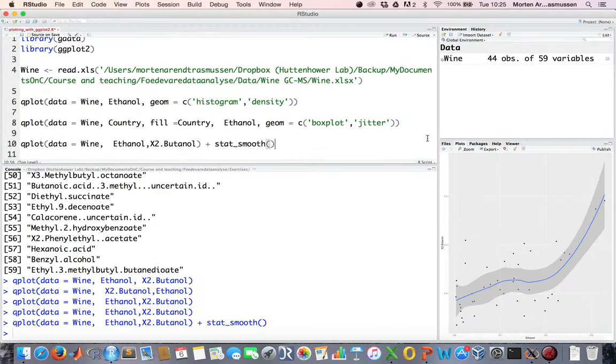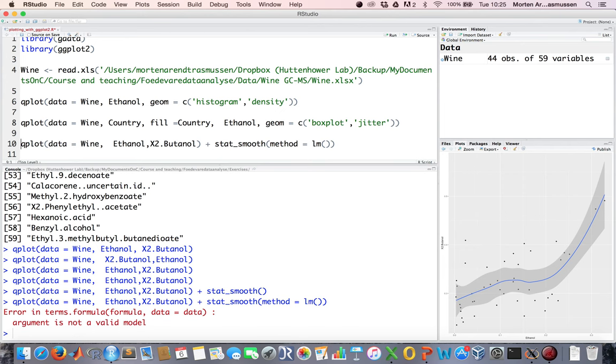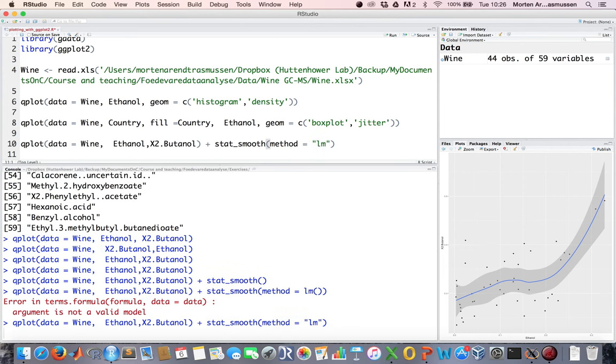We can say I would like this one to be a linear model. And by the LM argument, I enforce that the relation between the two is linear. And then we will get this one on.